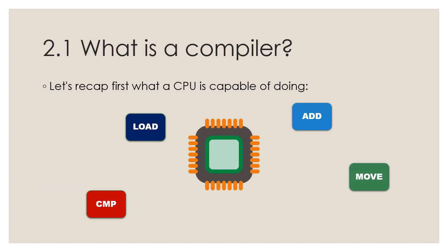To understand the significance of a compiler, let's discuss a bit about that very powerful chip inside our computers, the CPU. While it can complete billions of operations per second, the type of instruction that it can do is actually very simple. It can do basic arithmetic such as addition, subtraction, multiplication, division. It can load values, move values, and compare between two values.